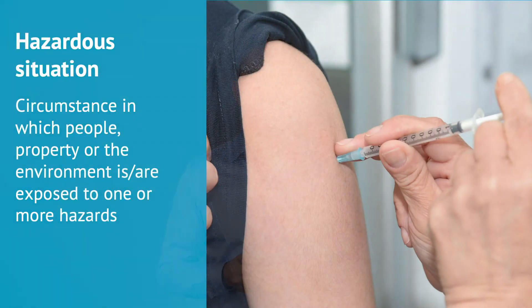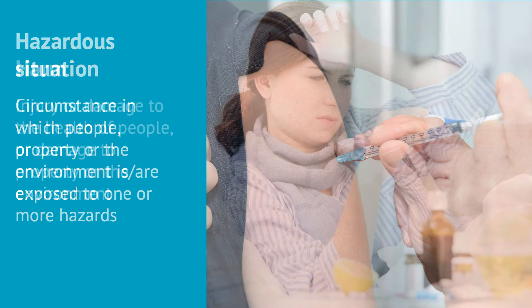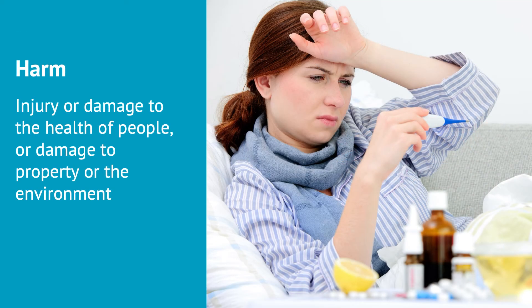The next terms on the list are hazardous situation and harm. Hazardous situation is a circumstance in which people, property, or the environment is exposed to one or more hazards. When a skin is punctured, this is an exposure to hazard — which in our example is bacteria. The hazardous situation occurs through a sequence of events, which in this example was no hand washing. Harm is injury or damage to the health of people or damage to property or the environment.